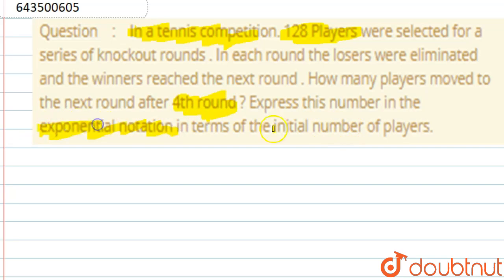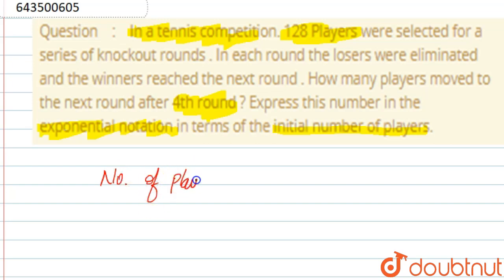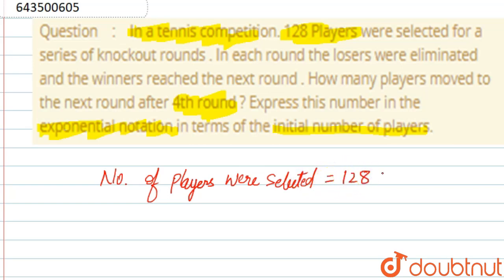So the initial number of players — as we can see, there are 128 players in a tennis competition in a knockout round. The number of players selected is 128, and the condition is that in each round the losers were eliminated and the winners will reach the next level.